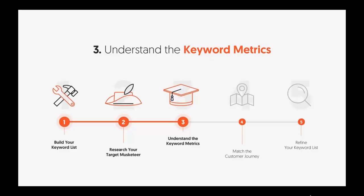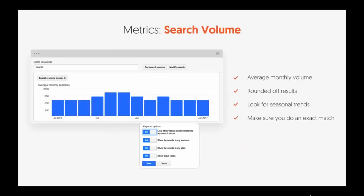Number three, as part of the five-step journey, is understanding the keyword metrics. When you look at Google Keyword Planner, you're going to get numbers and it'll show monthly volume. The average monthly volume is rounded off — it's not 100% accurate, at least what they're showing us. They probably have 100% accurate data on their end, but they're not always showing you that. You have to keep that in mind.